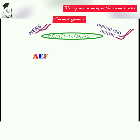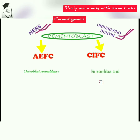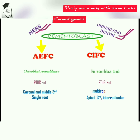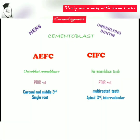Cementoblasts under influence of Hertwig's epithelial root sheath will form the acellular extrinsic fiber cementum, while under influence of the underlying dentine will form the cellular intrinsic fiber cementum. The cementoblast differentiated under influence of Hertwig's epithelial root sheath has osteoblast resemblance and parathormone receptors are absent, whereas the cementoblast differentiated under influence of the underlying dentine does not have resemblance to osteoblast but parathormone receptors are present.